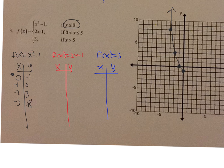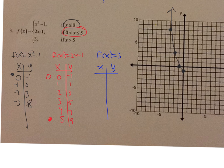Now let's do f(x) equals 2x minus 1. X values go from 0 to 5: at 0 it's an open circle, then 1, 2, 3, 4, and at 5 it's a closed circle. The y values are negative 1, 1, 3, 5, 7, 9. Plotting: (0, negative 1) open circle — that point is already there so I don't need to re-plot it — then (1, 1); (2, 3); (3, 5); (4, 7); and (5, 9) closed circle.